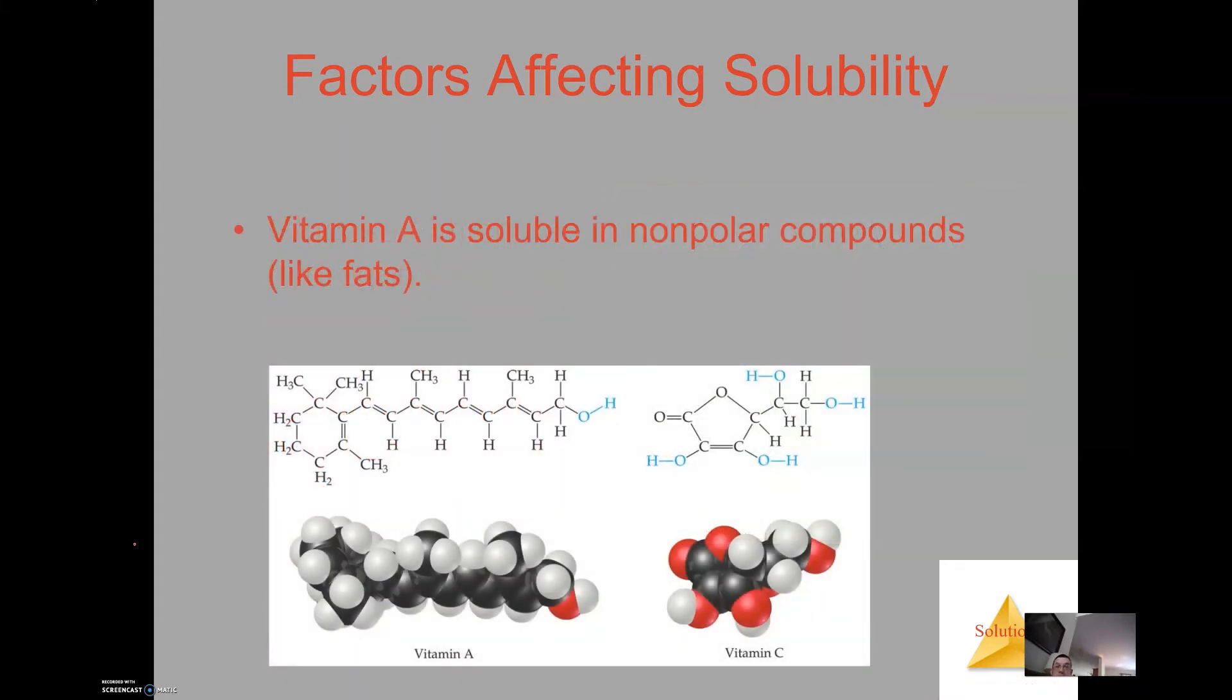So here are two more examples. With vitamin A we have vitamin C. Obviously you look at vitamin A - what sticks out to you? It's the carbon chain. It has a very long carbon chain. It has one alcohol group but that one alcohol group does not make a whole lot of difference in this structure's polarity.